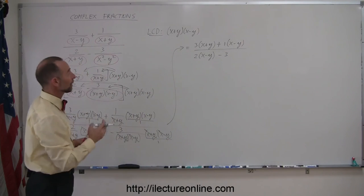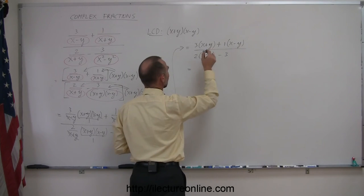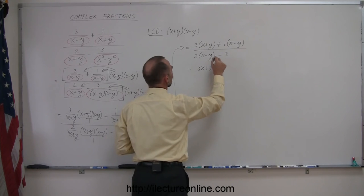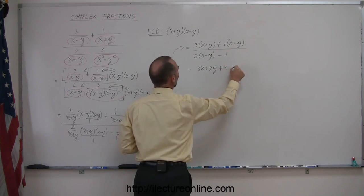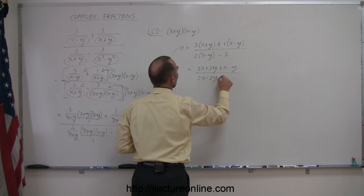And now, to continue, we simply have to get rid of the parentheses, so we distribute the numbers. Let's put the quantity inside the parentheses, so we get 3x plus 3y plus x minus y divided by 2x minus 2y minus 3.